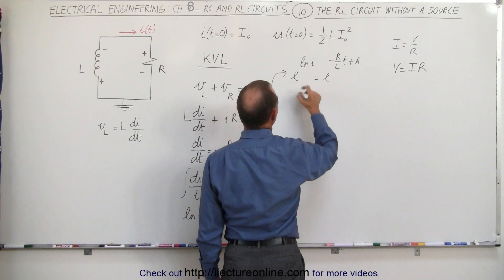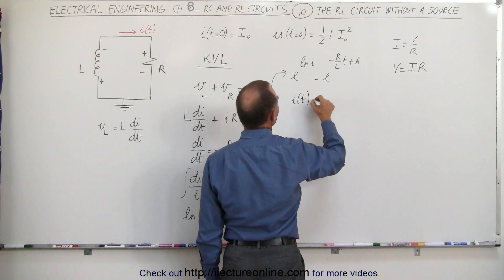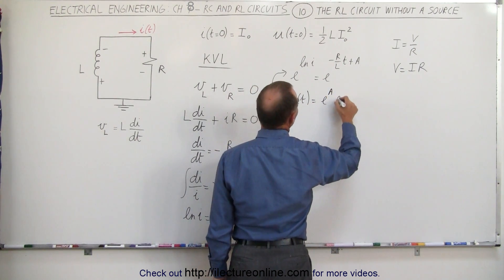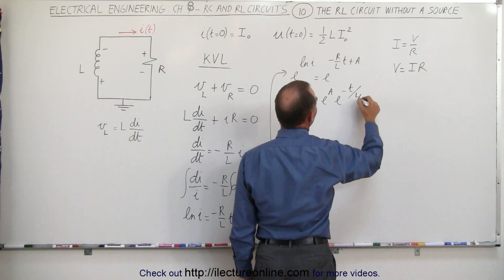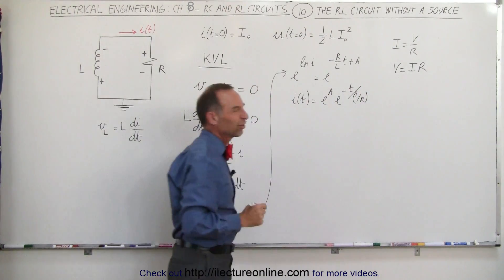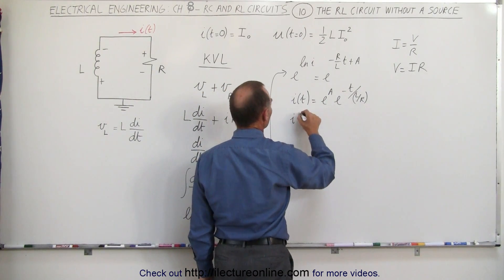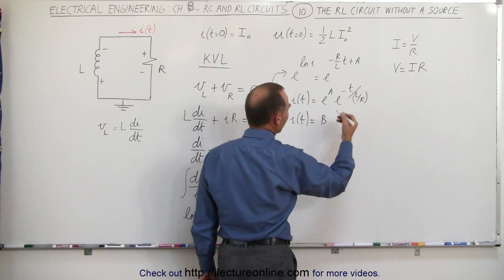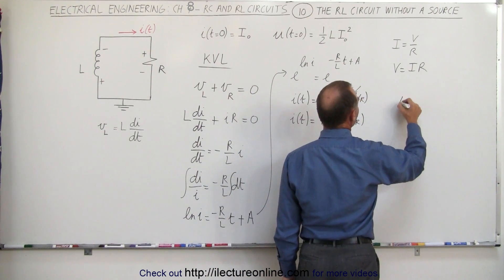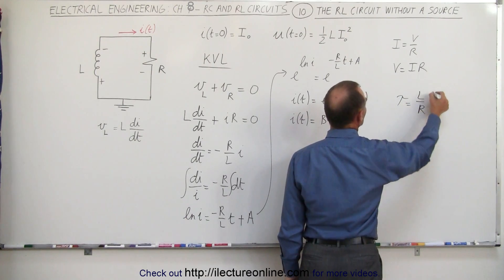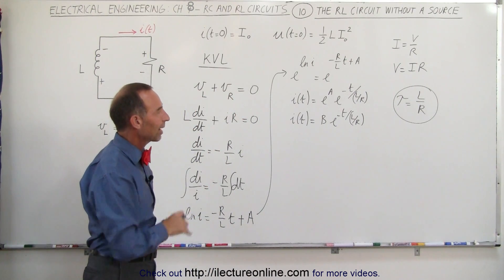Let's write it slightly differently by breaking out the plus A. The exponential negates the natural log, so we get I as a function of time is equal to e to the A times e to the minus t over — bringing the R down — L divided by R. Since L over R will become the time constant, and e to the A is simply another constant, we write the current as a function of time equals B times e to the minus t over L over R, where the time constant tau is simply L over R. Note that in an inductive circuit the time constant is L over R, whereas in a capacitive circuit the time constant is R times C.